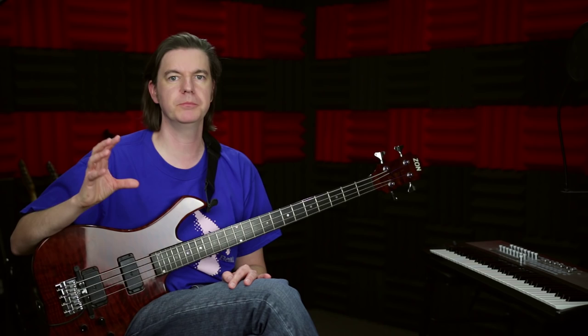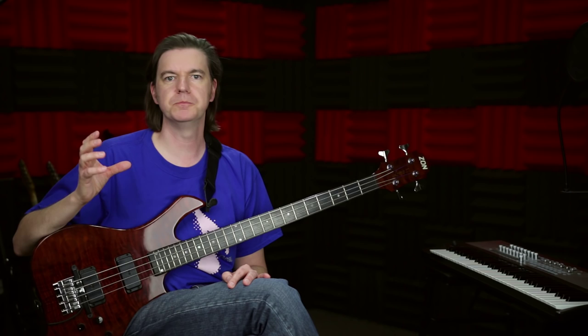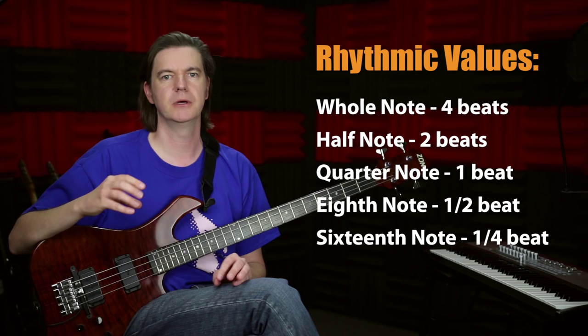The beat, meter, and tempo are all really big parts of rhythm. But when people talk about rhythm they usually mean something a little more specific: when and for how long different musical events occur. A musical event could be anything — a single note, a group of notes played at the same time, a drum being hit, or even silence. These rhythms all have names like whole note, half note, quarter note, eighth note, and all that's describing is a fraction of the measure. So a whole note is four beats, or a half note is two beats.